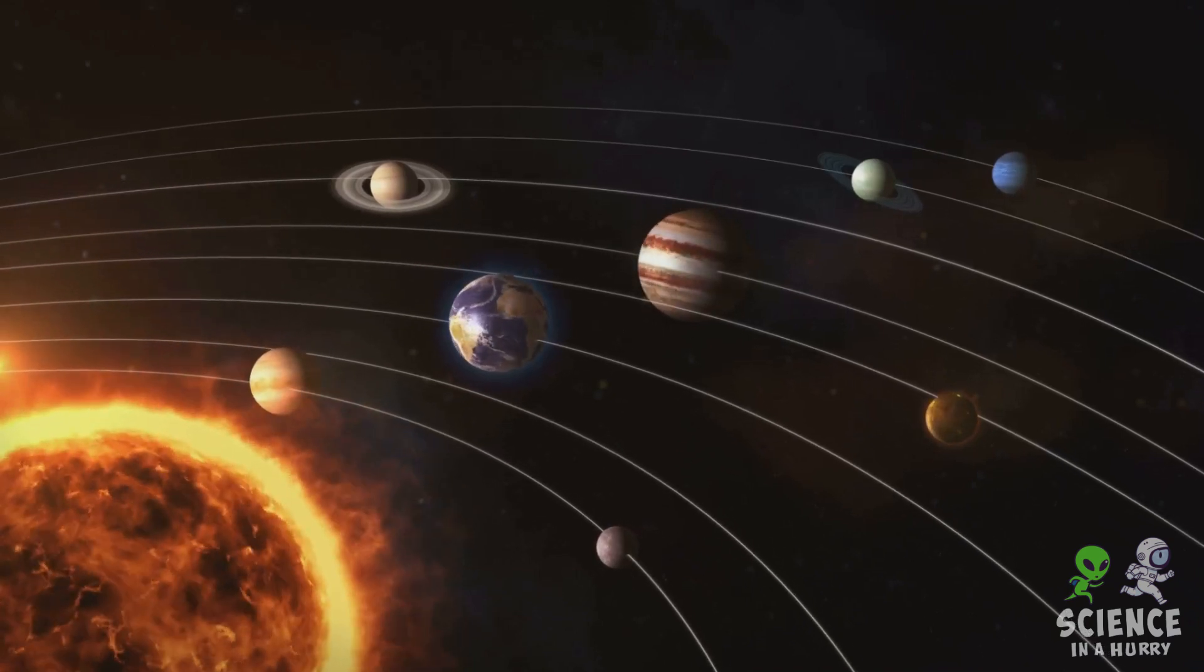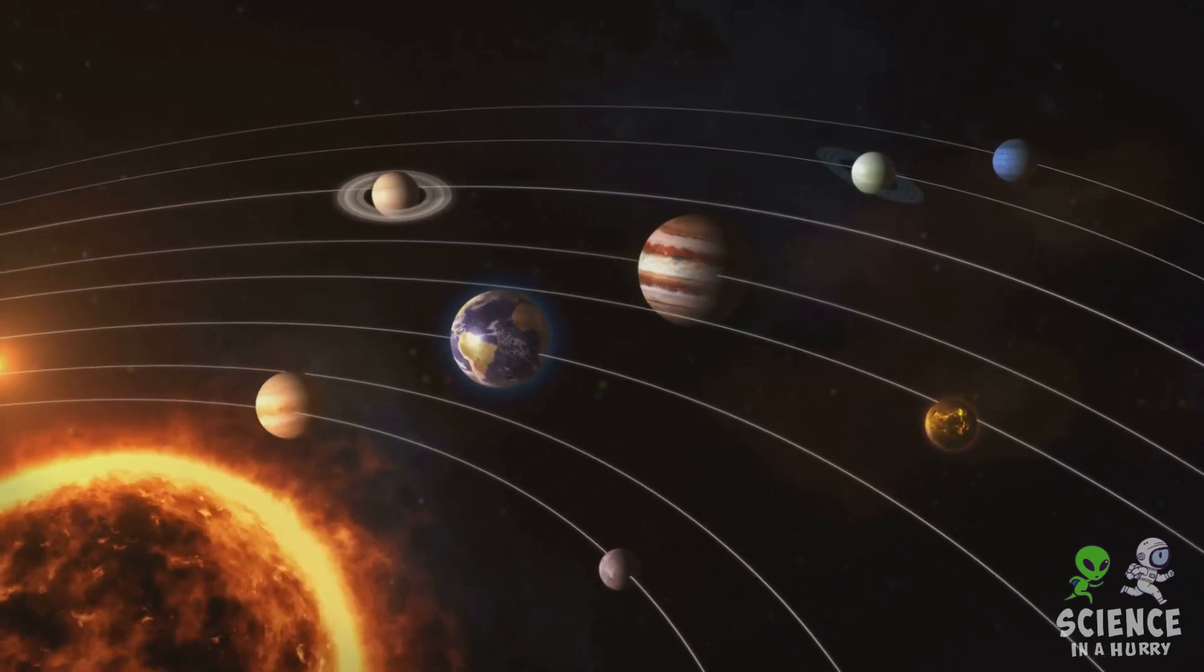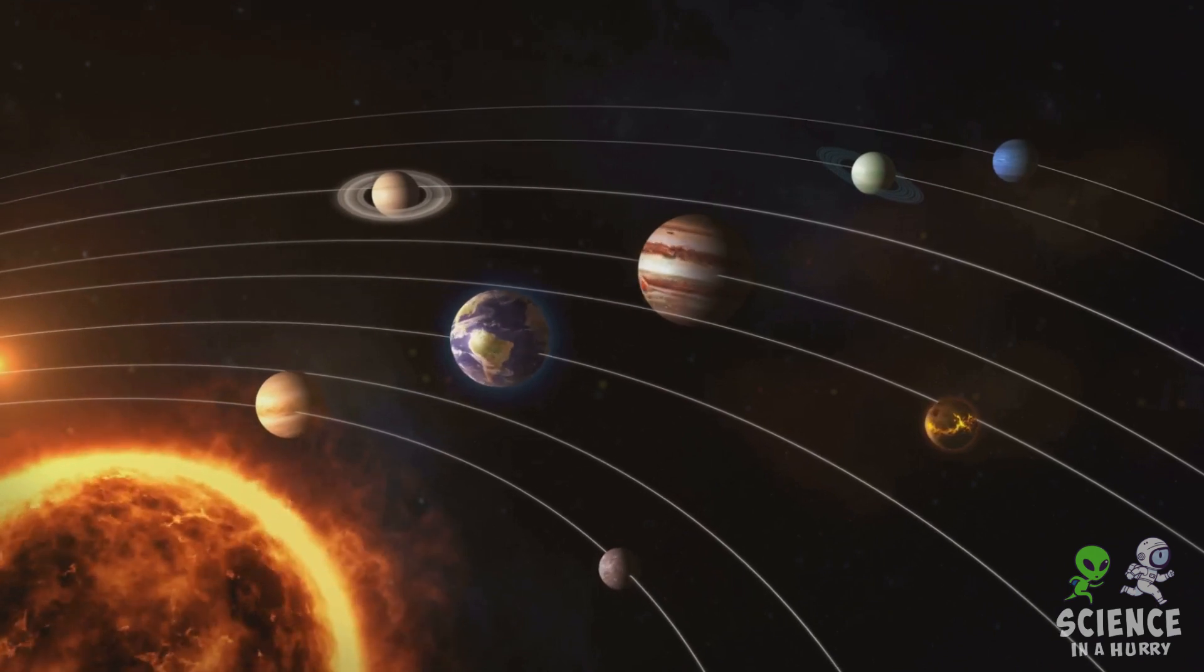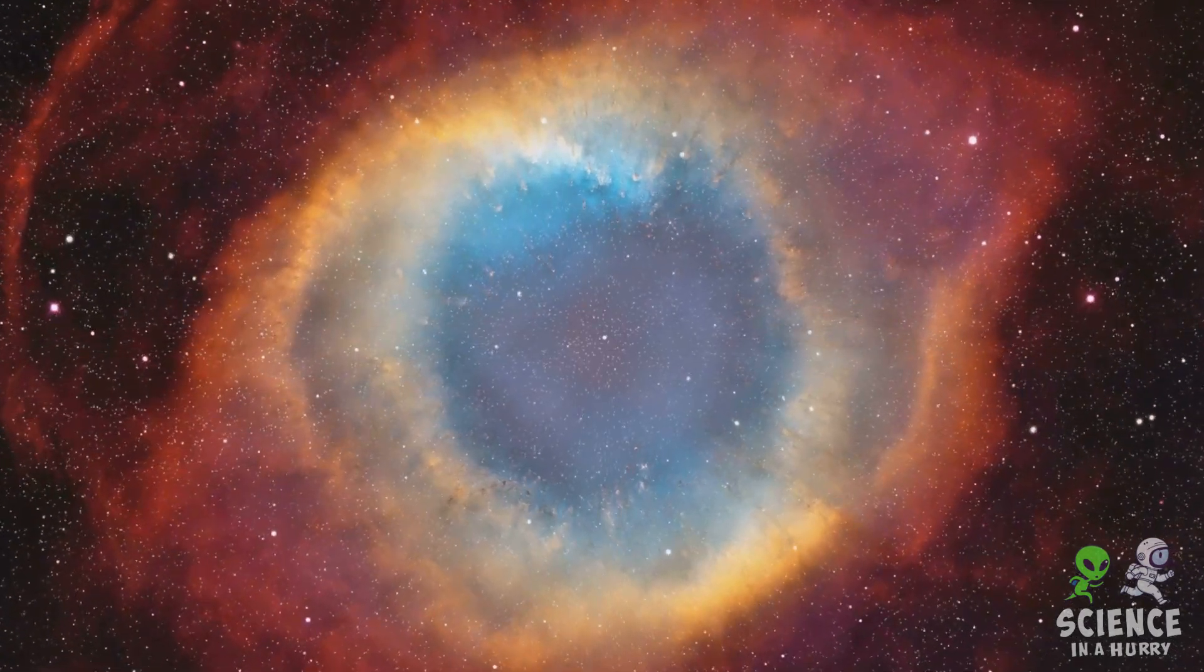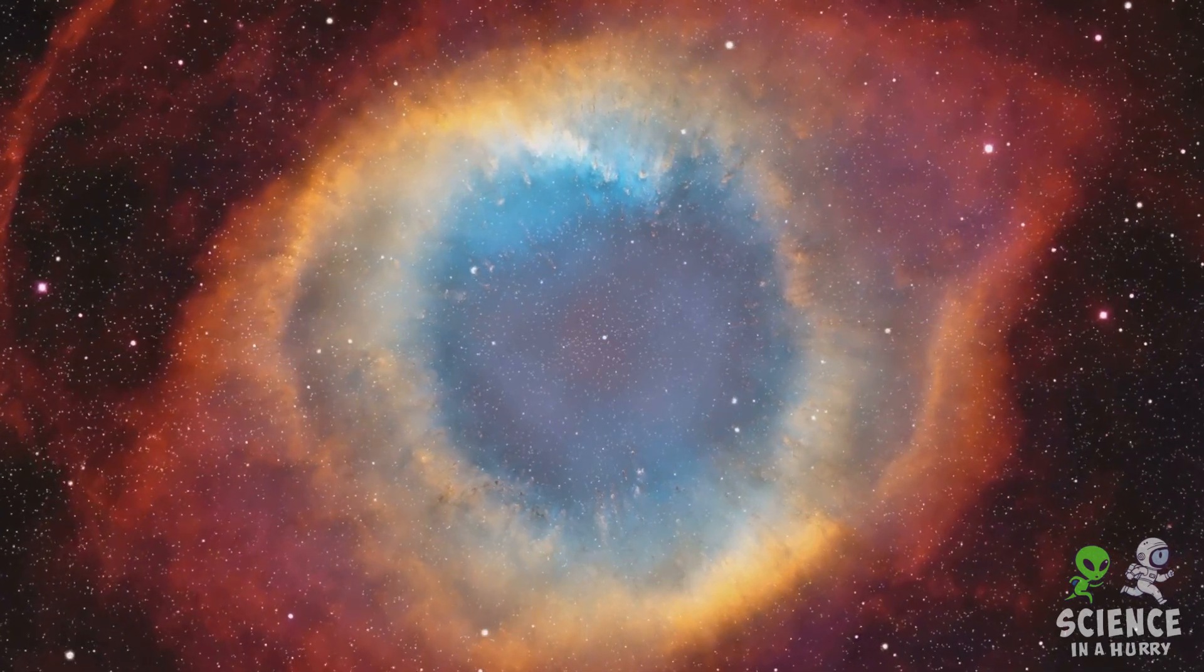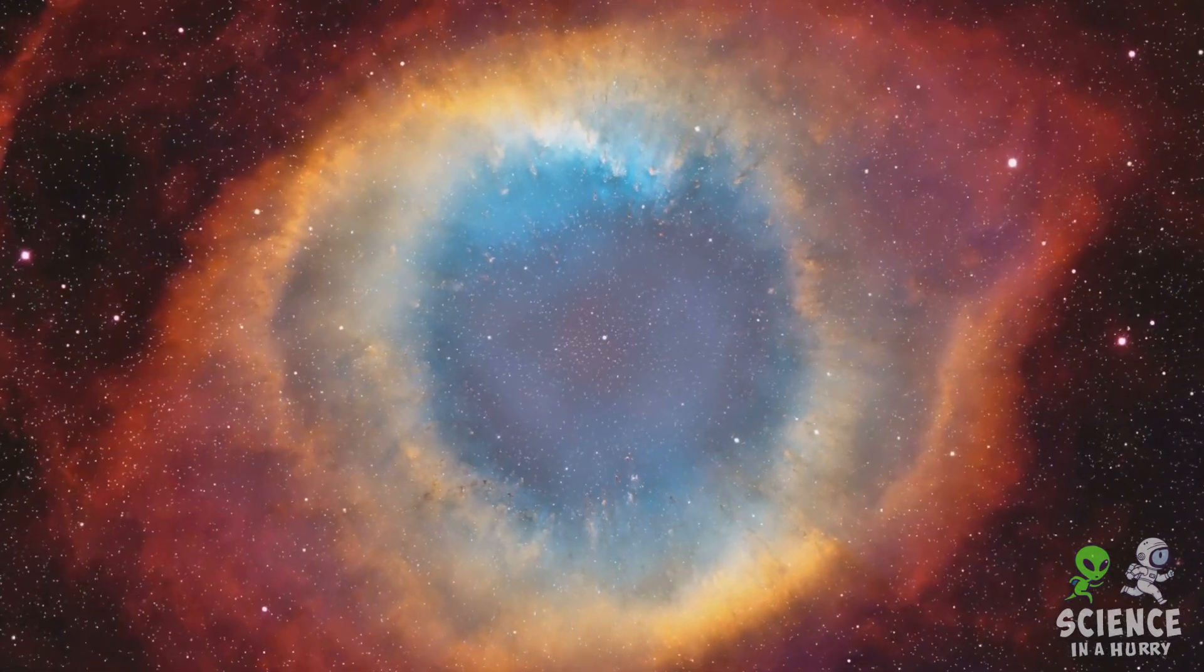The birth of a solar system is a cosmic tale of transformation and creation beginning in the cold dark depths of space. Imagine a vast rotating cloud of gas and dust known as a molecular cloud or a nebula. This is the cradle of solar systems.